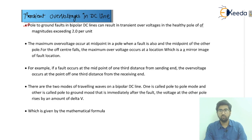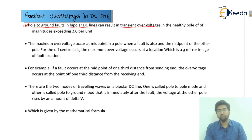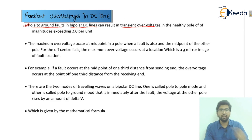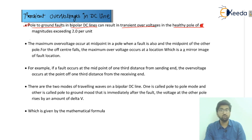If we talk about the pole-to-ground faults in the bipolar DC lines — we have DC lines as monopolar, bipolar, and homopolar — these can result in transient overvoltages. These transient overvoltages are of short duration and occur in the healthy pole. The magnitude of these transient overvoltages exceeds 2.0 per unit.